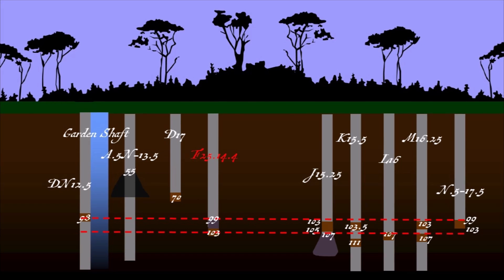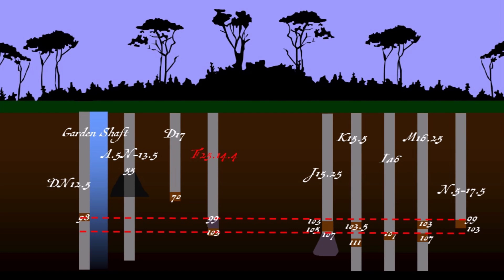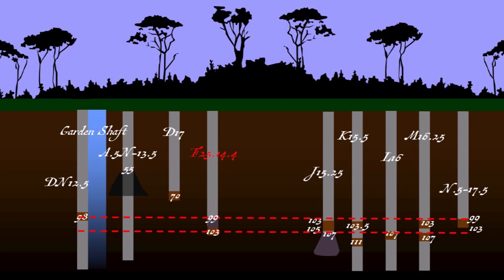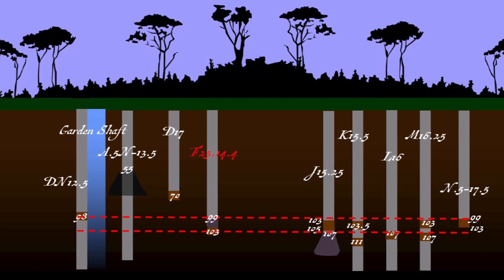Surveyor Steve Guptill summarizes the double tunnel theory in a later interview, saying, "Right now, we've got real evidence that we have two different tunnels at two different elevations, essentially in the same location."